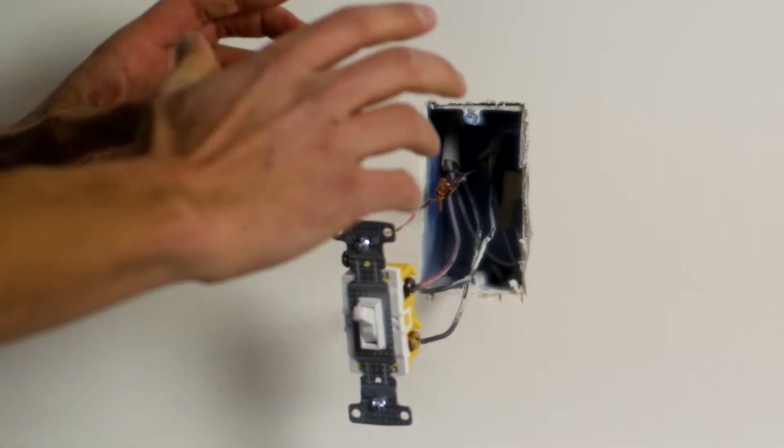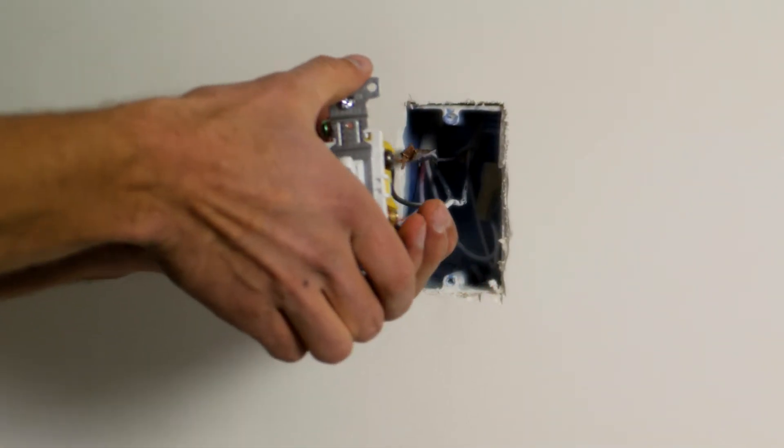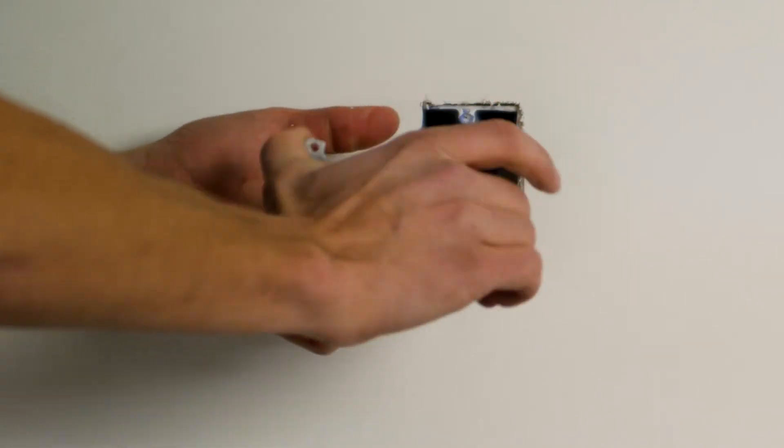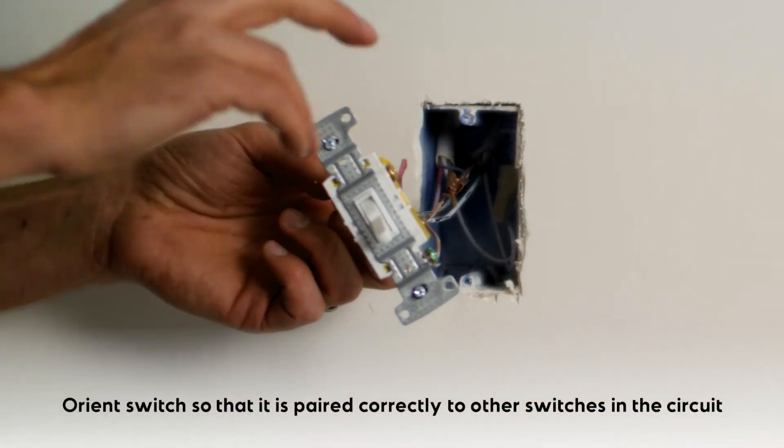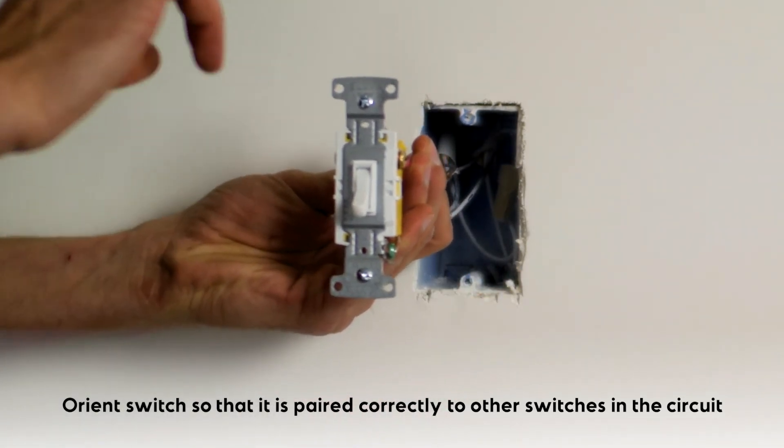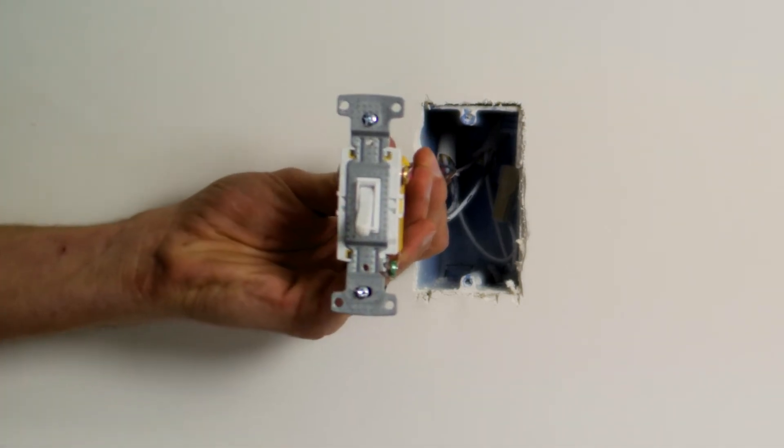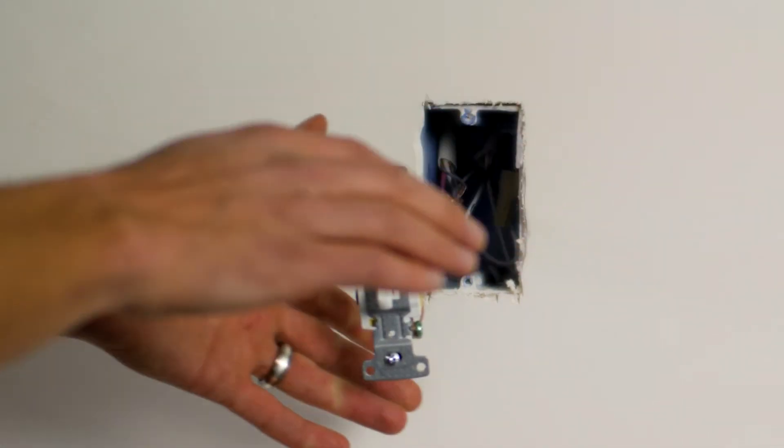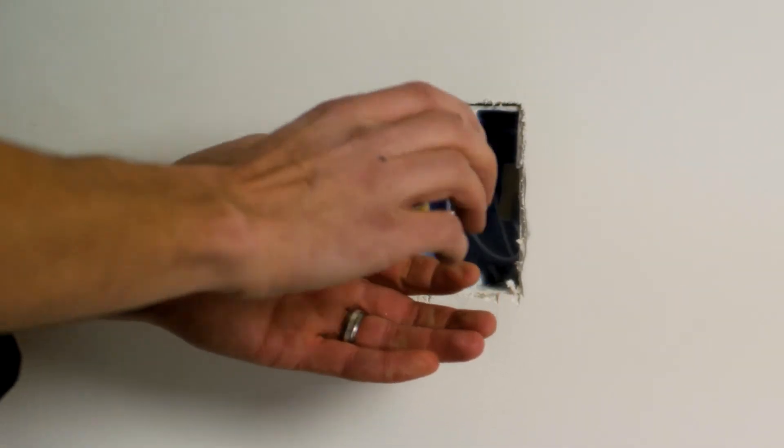The orientation of the switch before we tuck and fold these conductors safely back into the box—the orientation of the switch is either way, but what I need to do is pair this switch with that switch such that when the lights are off, both switches of the multi-location lighting are in the down position. That's what I'm shooting for here. I'm not worried at this point about the orientation of this switch.